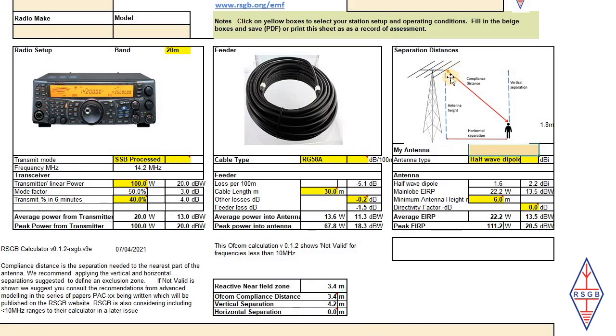So, what that means is I have to keep any people that may be around at least 3.4 meters away from the nearest part of the antenna. Now, in my case, even with the mast at quite a low height of 6 meters, this is achieved because the vertical separation, which is 6 meters antenna height, minus the person height, is 4.2 meters. That 4.2 meters is greater than the compliant distance, so it's impossible for anybody on the ground to get closer than 3.4 meters.